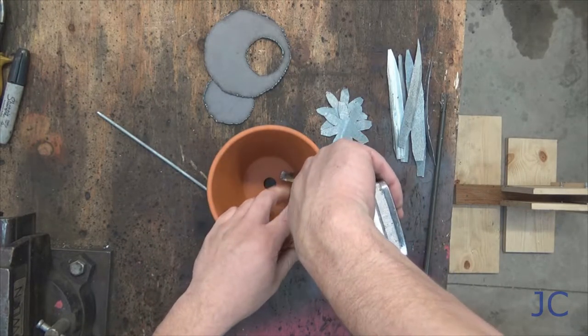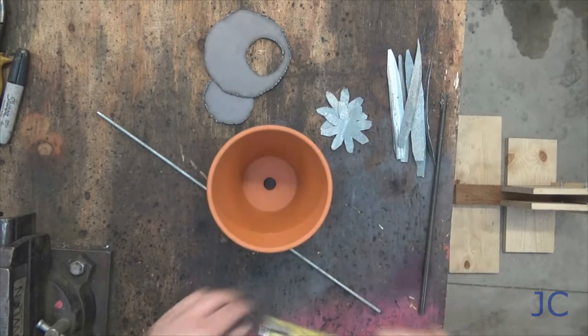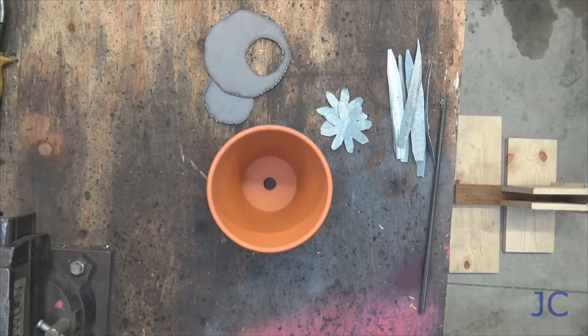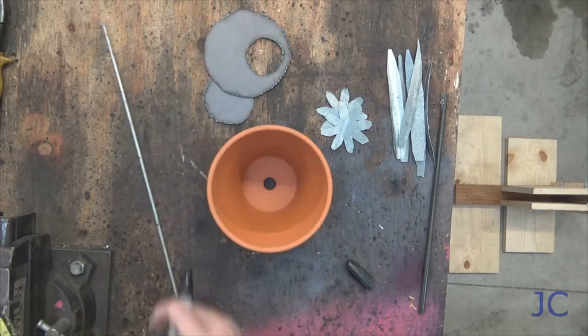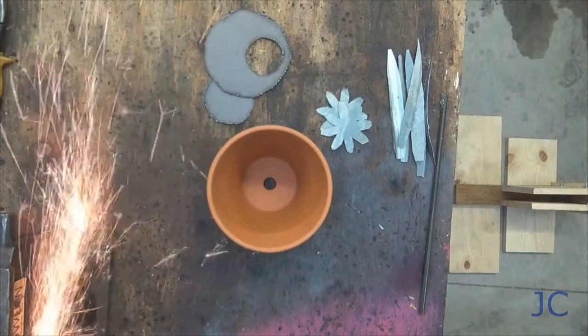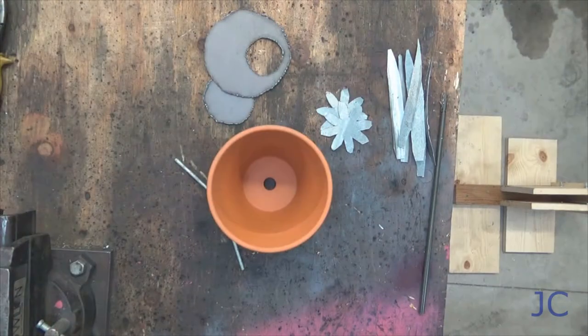Now you're going to cut three pieces of rod that are about an inch short of the interior height of the pot that you're going to use. These are going to go in between the small piece that fits the bottom of the pot and the larger piece with the hole in it for the solar unit.